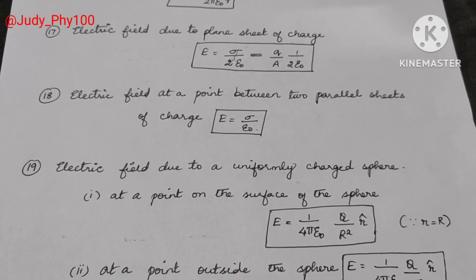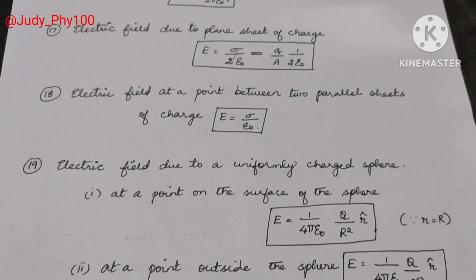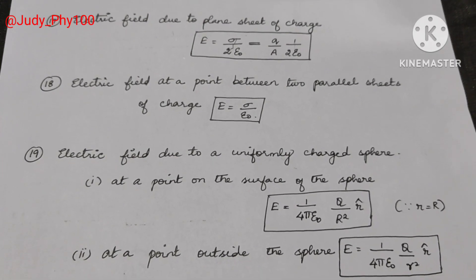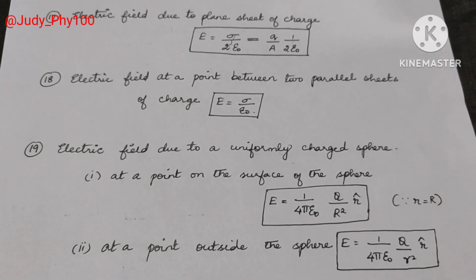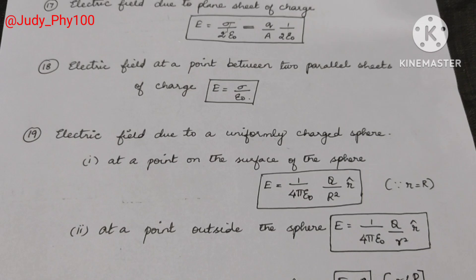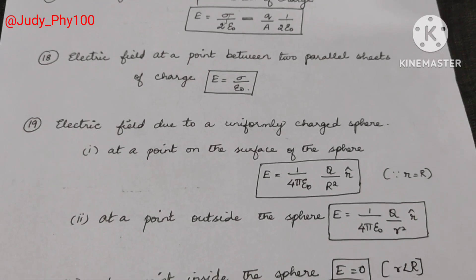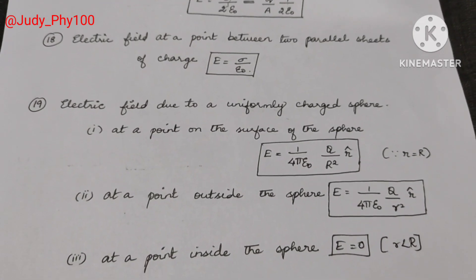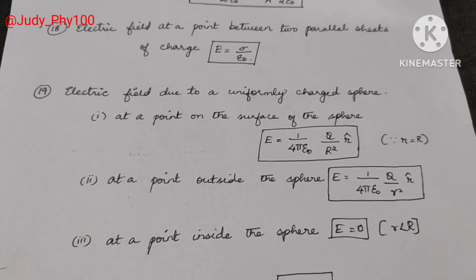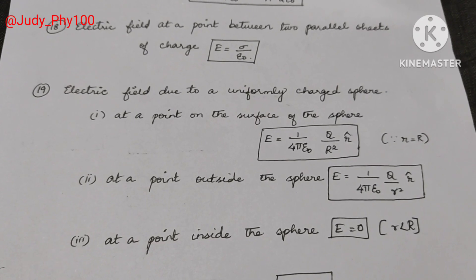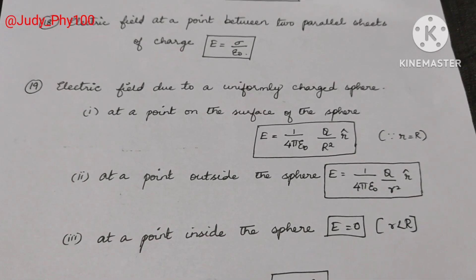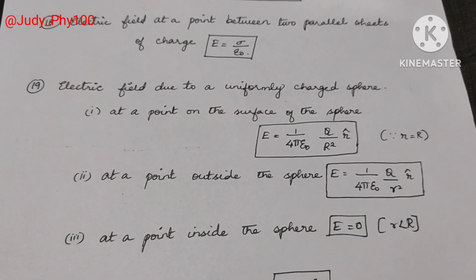At a point outside the sphere: E is equal to 1 by 4 pi epsilon naught, capital Q divided by small r squared. At a point inside the sphere: E is always equal to zero.